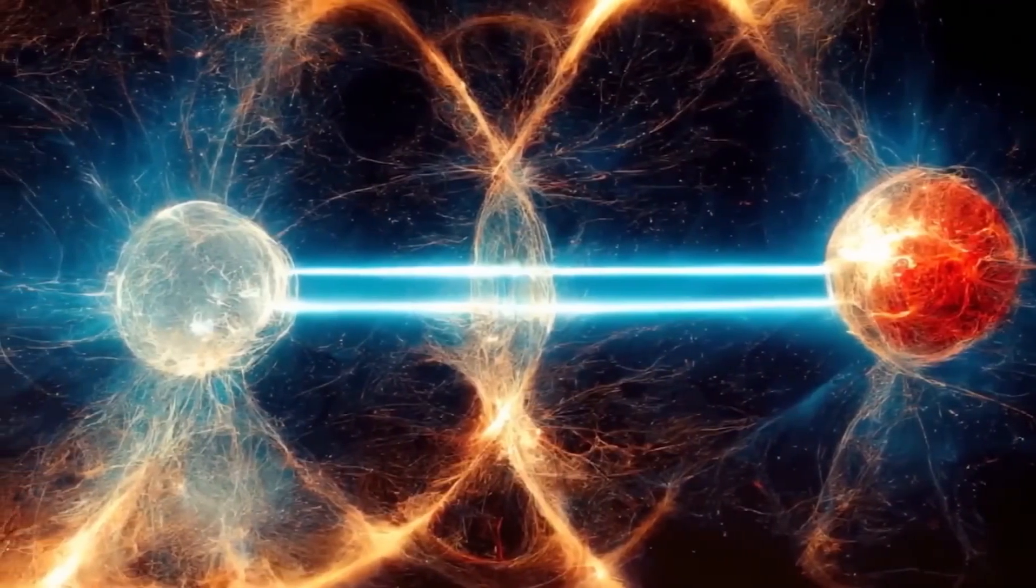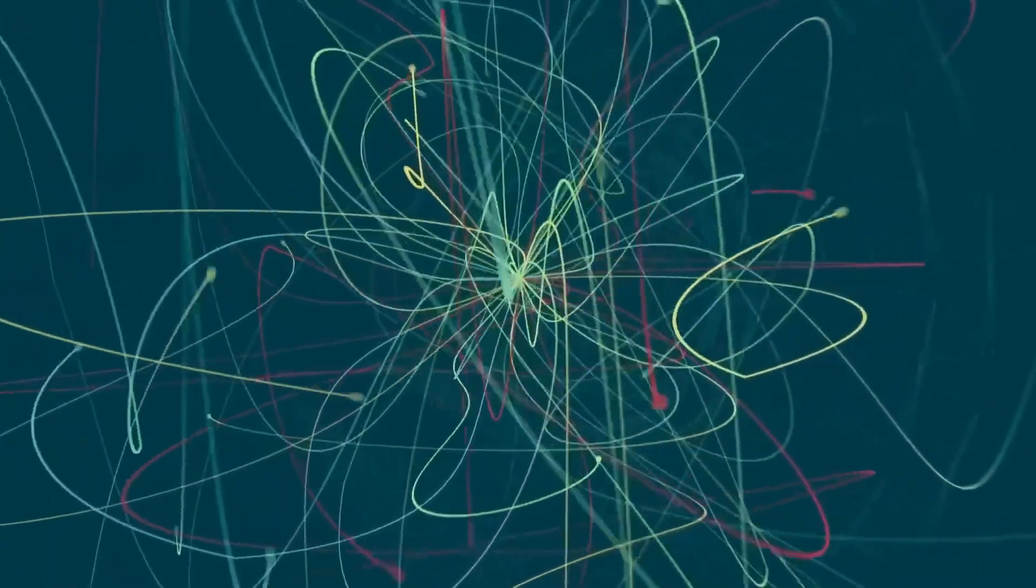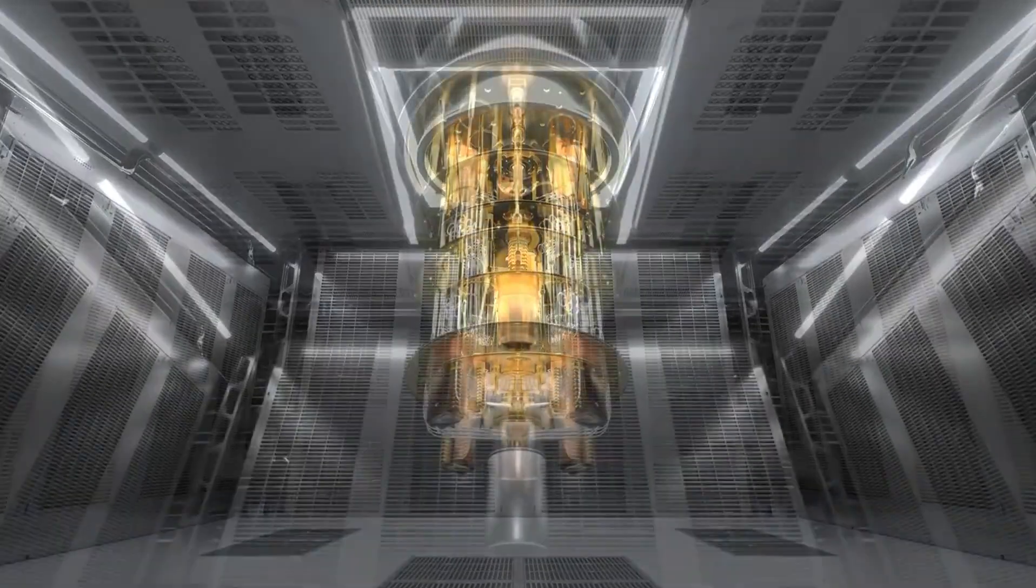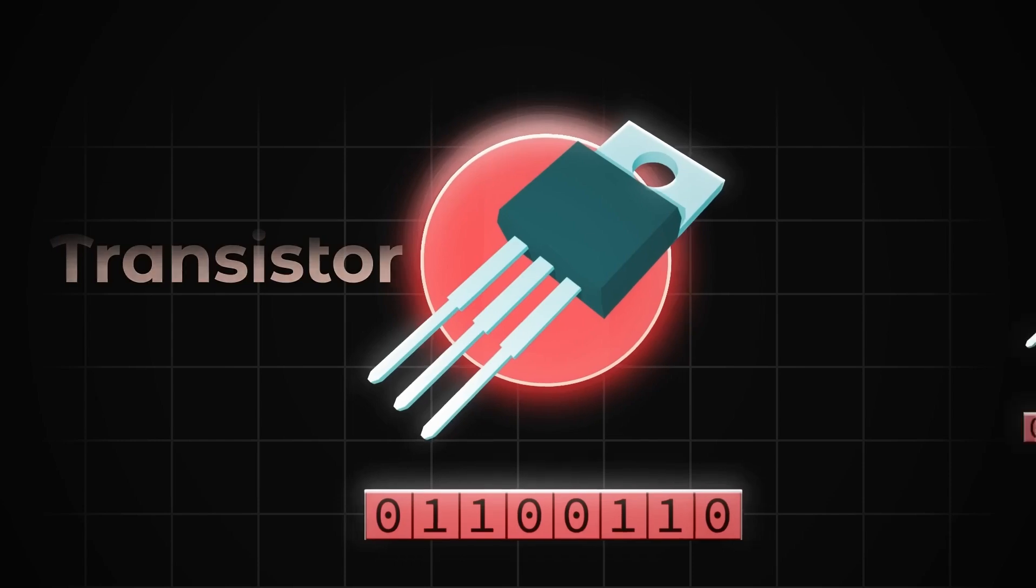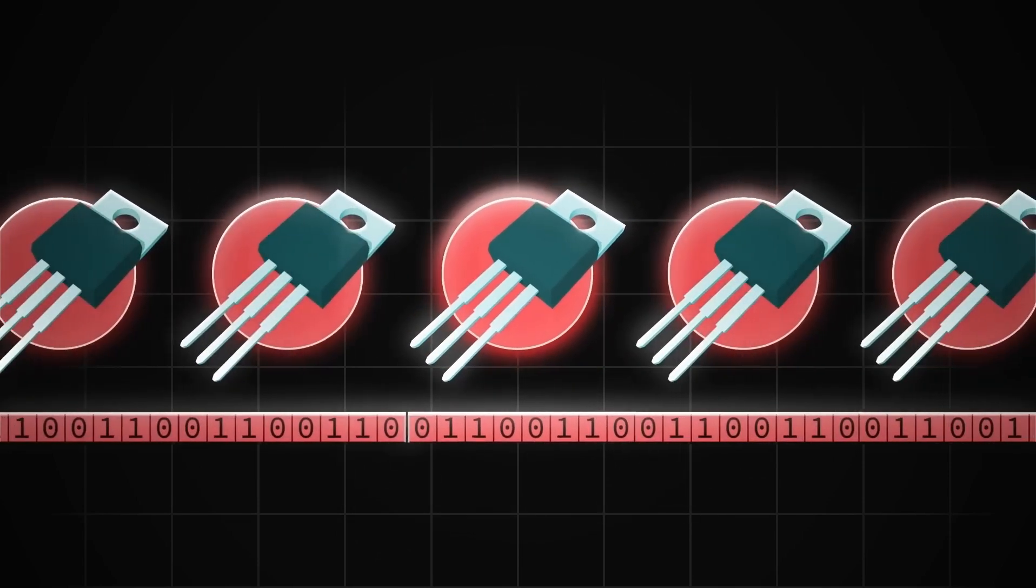In traditional computing, changing the state of one bit only affects that bit. In quantum computing, changing one qubit can instantly affect another, even if they are light years apart. This ability to perform massive amounts of calculations in parallel is what gives quantum computers their extraordinary power.